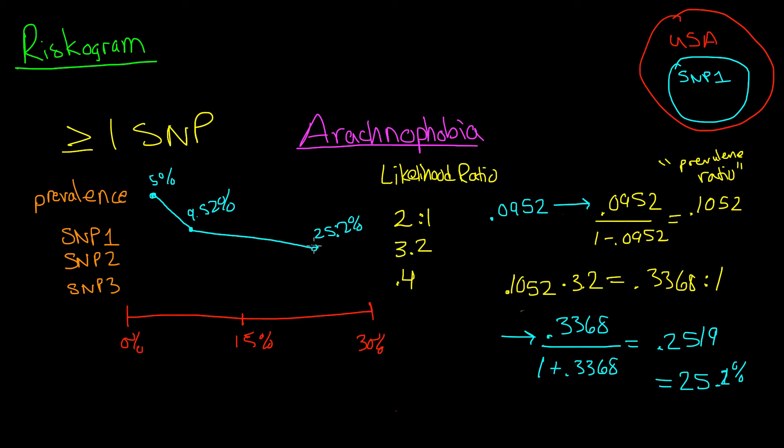Now if we do the same thing for SNP3, the likelihood ratio here is 0.4. And I'm not going to walk through the calculation again. It's 11.87% is what we end up with.